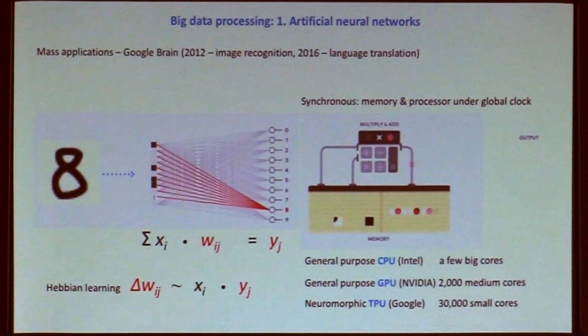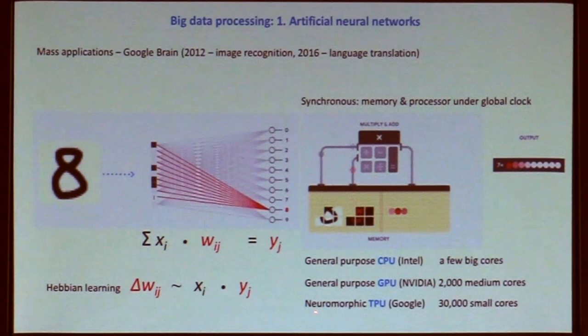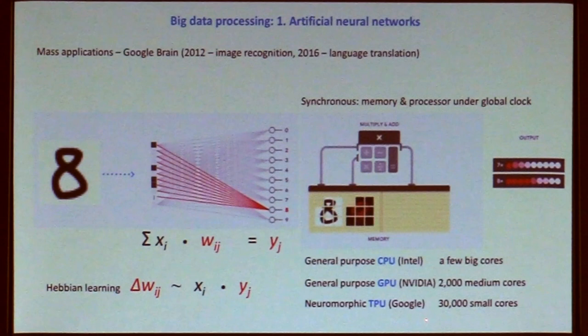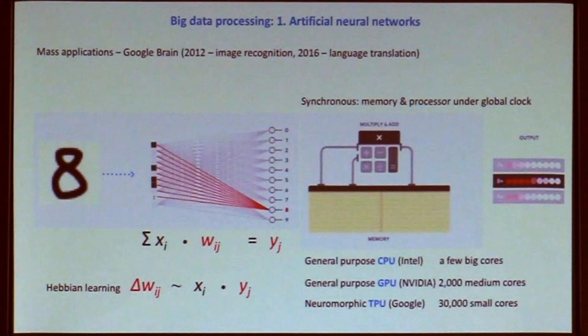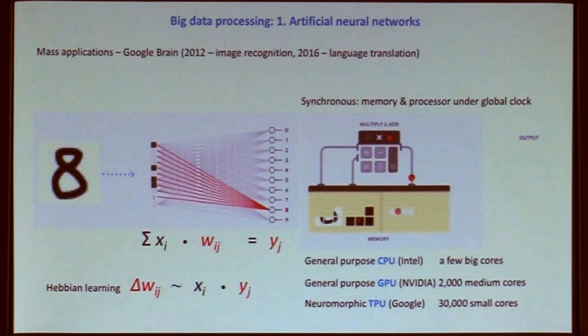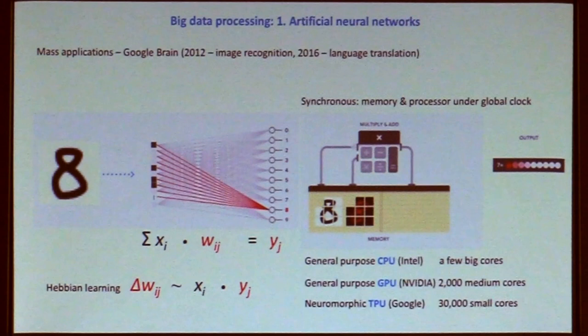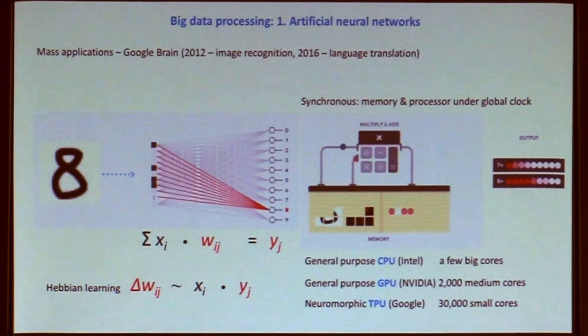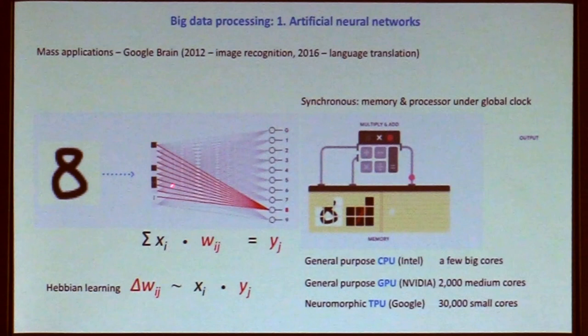Google recognized the importance of doing things in parallel and developed its own tensor processing unit, which has around 30,000 cores. Those cores are now very small — they can only do dot products and sums in single precision, because that's enough for this simple mathematical operation. What they focus on instead is very fast and very large memories, because you need your computer ready to handle huge amounts of input data and parameters.